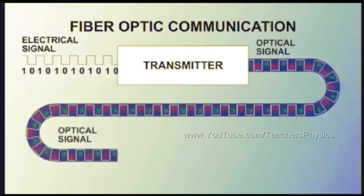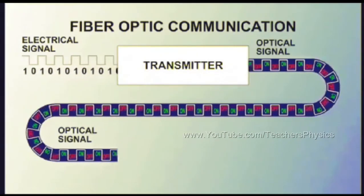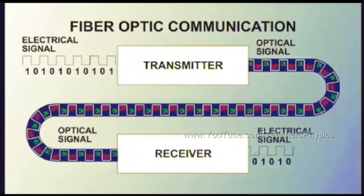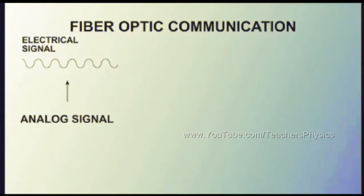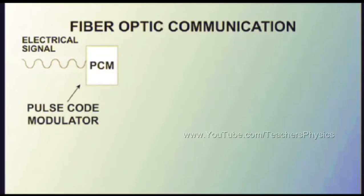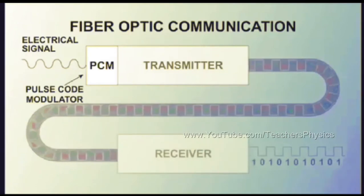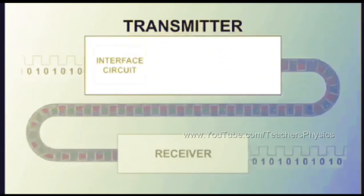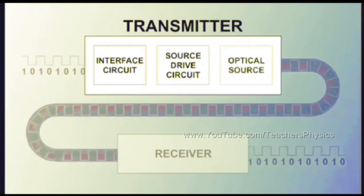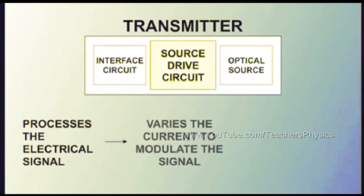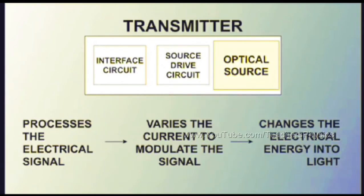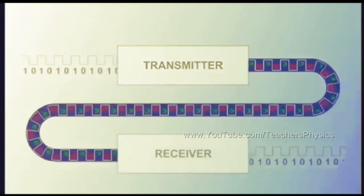In general, the fiber optic communication system consists of a transmitter to produce and encode the light signals, optical fiber to conduct the light signals, and an optical receiver at the destination to decode the light pulses and return them to digital form. Electrical signals can be either digital or analog; analog signals require pulse code modulation to convert them to digital form. The transmitter is composed of an interface circuit, source drive circuit, and optical source. The interface circuit processes the electrical signal, making it compatible with the source drive circuit, which in turn varies the current to modulate the optical signal. The optical source changes the electrical energy into light.